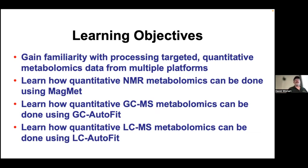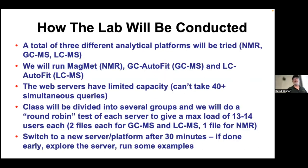We're trying to do quantitative metabolomics. You're going to be processing real experimental data from real samples. You'll do NMR, GCMS, and LCMS. For NMR, you'll use software called Magmit. For GCMS, we'll use GC AutoFit. For LCMS, we'll use LC AutoFit. So that's three platforms and three software types.